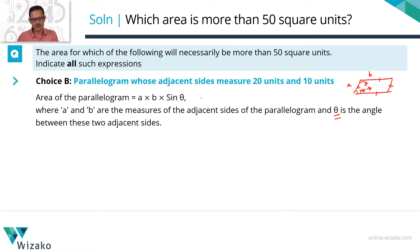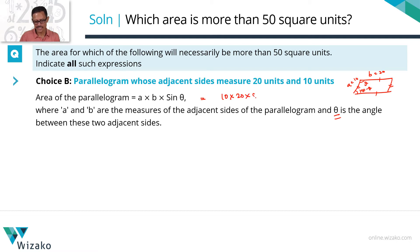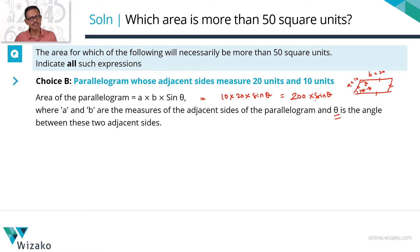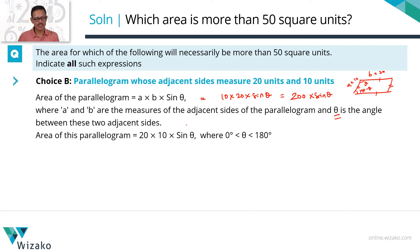It doesn't matter which angle we use because sinθ = sin(180 − θ). With a = 10 and b = 20, the area becomes 10 × 20 × sinθ = 200·sinθ. Now we need to figure out: when we multiply sinθ with 200, will the result always be greater than 50, or can there be instances where it is less than 50?